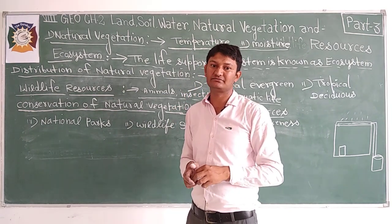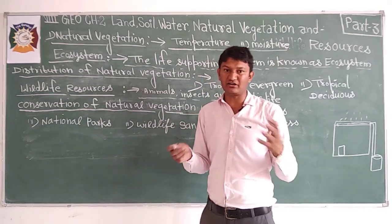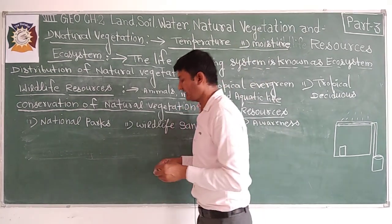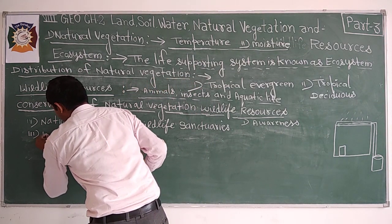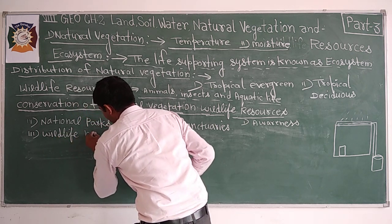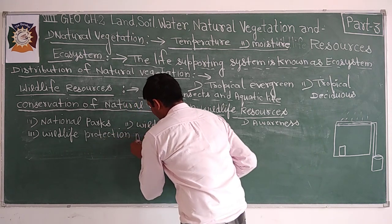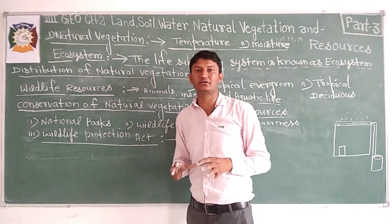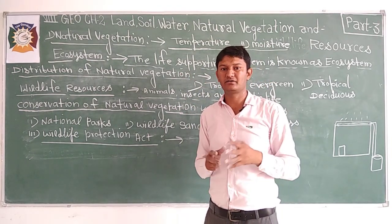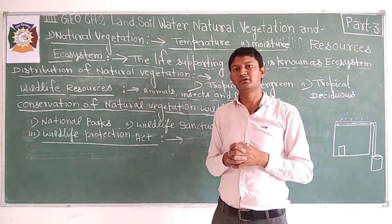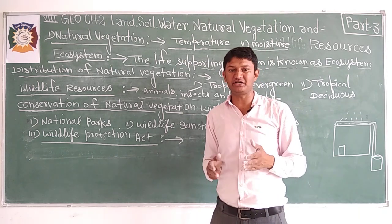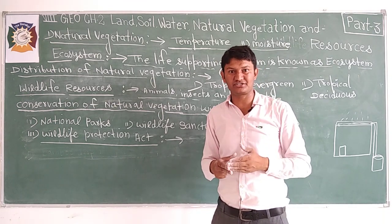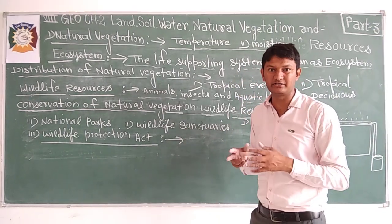Different governments have introduced new programs. In India, the Wildlife Protection Act has been introduced by the government, under which we cannot kill animals like tigers, rhinoceroses, peacocks, and others. Special projects like Project Tiger and Project Elephant are also schemes initiated by the government of India.